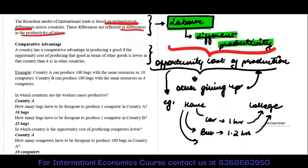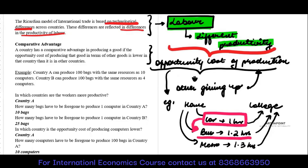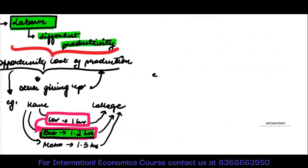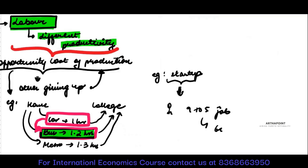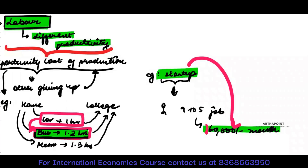Had I gone by metro, it would have taken me 1.3 hours, including all those autos in between. When I take the car, the cost of the next best alternative is the opportunity cost of the car. Another example: suppose I start my own startup, but had I not, I would have taken a 9-to-5 job earning 60,000 per month. So how much am I giving up by starting the startup? I am giving up 60,000. This is the cost of my next best opportunity, and hence this is my opportunity cost.